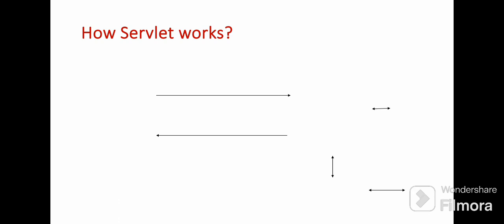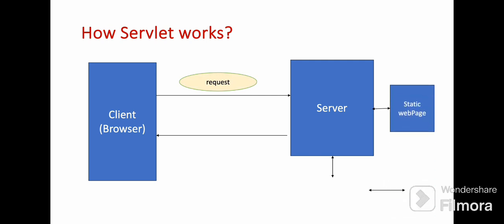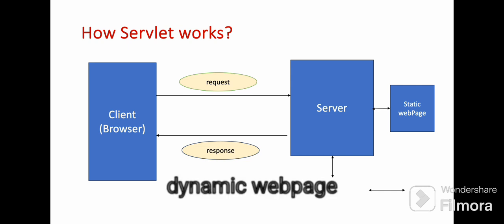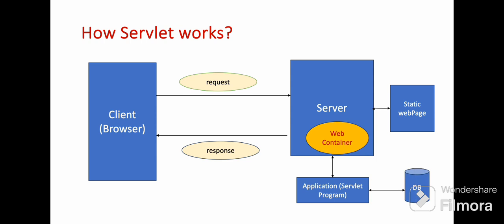Now let's understand how this servlet works. We have client and server. The client will send a request to the server. If it is a direct request, the server will have static web pages already available within it and will send that as a response to the client. But if the client is requesting something which is not available on the server — that is a dynamic web page — the server will have something called a web container, and with the help of that it will reach the application, which is a normal Java application. In that we have some servlet programs and also it is connected to a DB. Based on that, it will process and fetch the information, send it back to the server, and then the server will send the response back to the client.